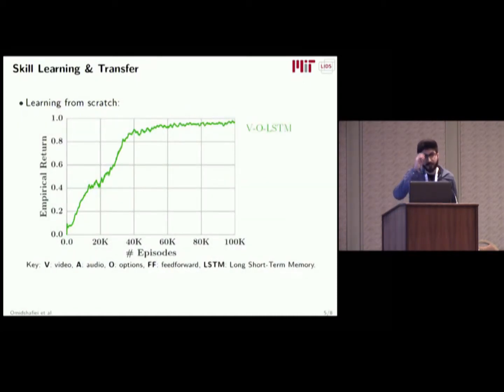First we compare against the baseline of just using video options and LSTMs, and we see that the agent converges to a reasonable policy after about 40,000 episodes. Interestingly, once we add audio, it actually takes the agent much longer to learn the task. What we think is happening is that it's essentially becoming over-encumbered in terms of finding correlations between video, audio, and all these sensory modalities and the reward. But as soon as we introduce cross-modal attention over our sensory inputs, we dramatically reduce the number of episodes needed to learn the task.